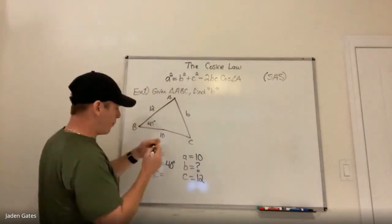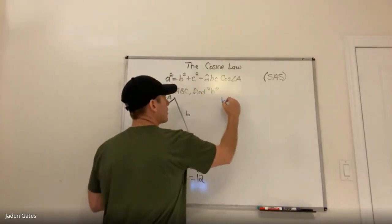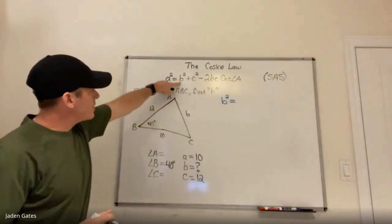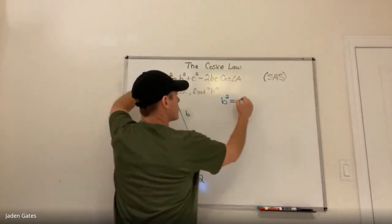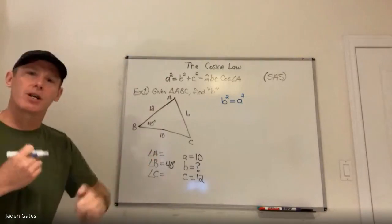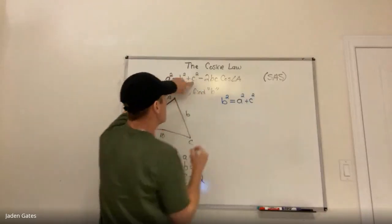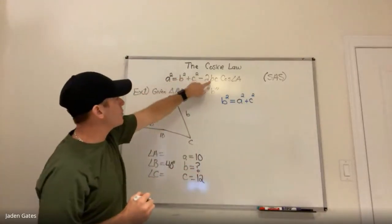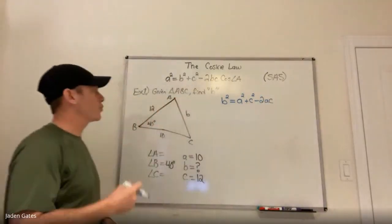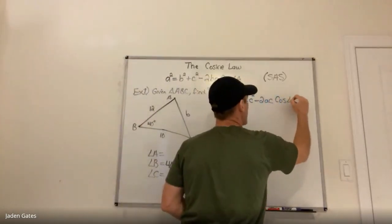When I rewrite this formula by switching a's and b's: instead of a squared, I want side b, so I'll have b squared on the left. This b squared becomes an a squared. C squared I'm not touching — I'm just switching a's and b's. Instead of minus 2bc, I'm going to have minus 2ac, switching the b out for an a. And instead of cosine angle A, I'll have the cosine of angle B.